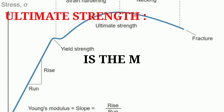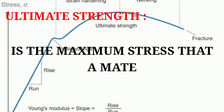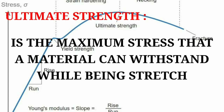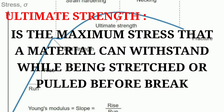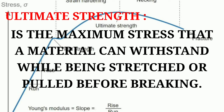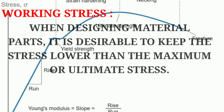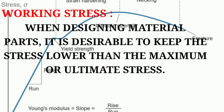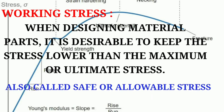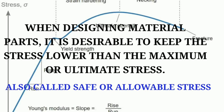What is the ultimate strength? The ultimate strength is the maximum stress that a material can withstand while being stretched or pulled before breaking. And what is working stress? When designing a material or parts, it is desirable to keep the stresses lower than the maximum or ultimate stresses, also called allowable stresses or safe stresses.